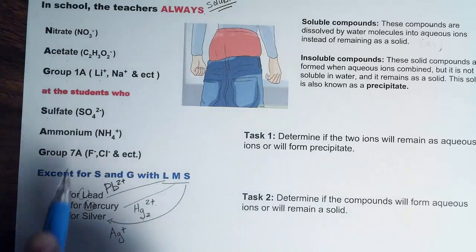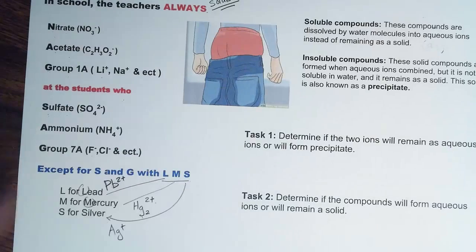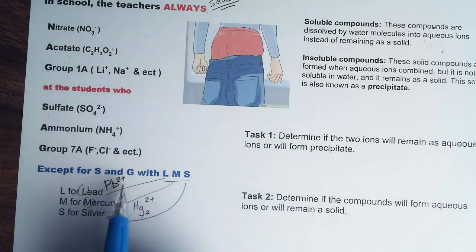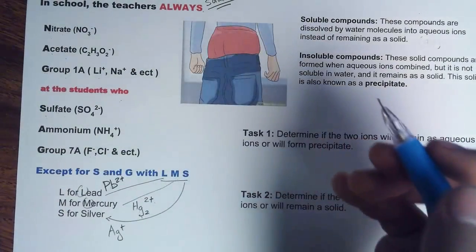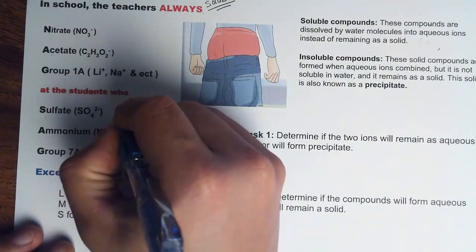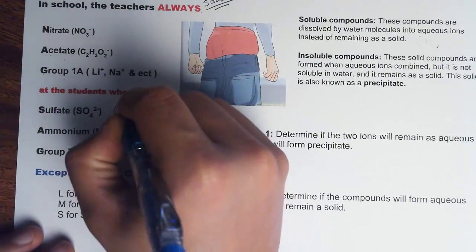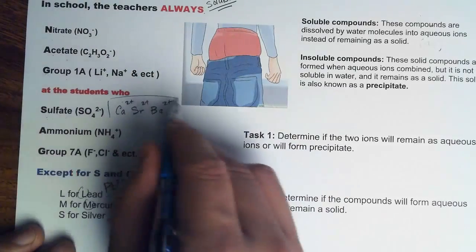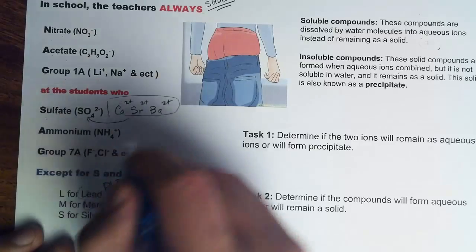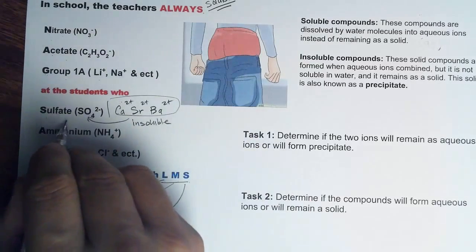When Group 7A ions are bonded with something other than LMS, they will be soluble. Sulfate is always soluble, except when combined with LMS. Sulfate is also tricky because when bonded with calcium, strontium, or barium, it will always be insoluble.